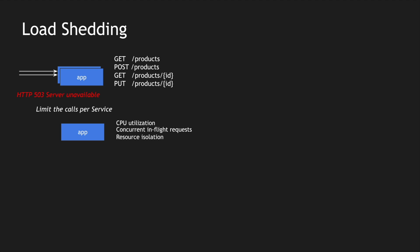In rate limiting you would have seen we return a 429 Too Many Requests, but for load shedding we want the service to return 503. Even the load balancer can read the 503 and then route the traffic to a different instance. So if one instance returns 503, subsequent calls will be routed to a different instance. The load balancer can trigger a keep-alive check, and if keep-alive returns 503 it routes traffic to another instance that is available to serve.